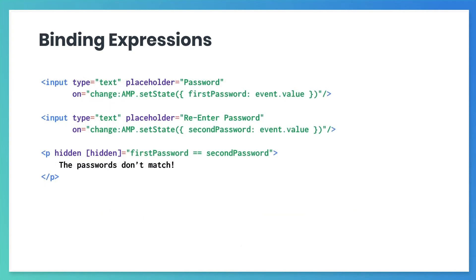This sample code shows how to use more complicated binding expressions. This page requires the user to pick a password and then retype that password to confirm the intended value. The error message is hidden by default. It's only when the first password and the second password fields don't match that the paragraph's hidden attribute is set to false, which displays the error message: "the passwords don't match."